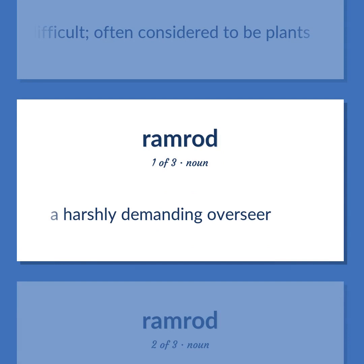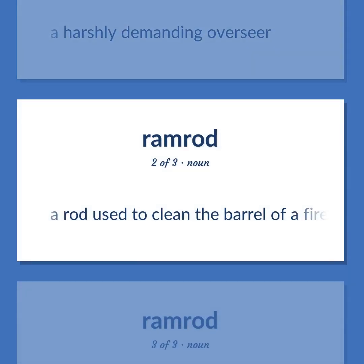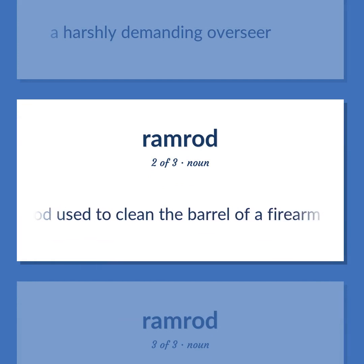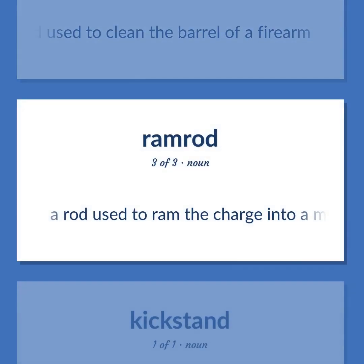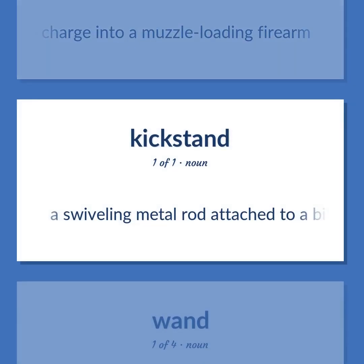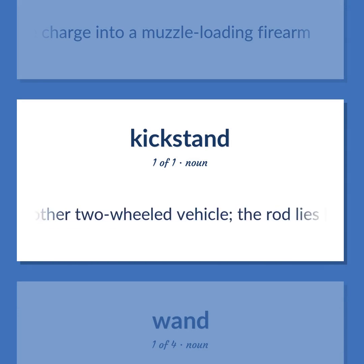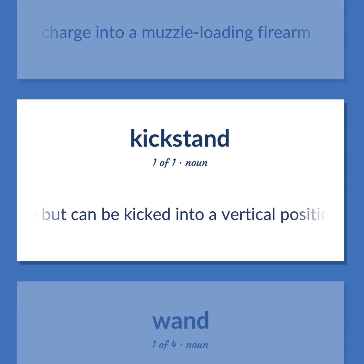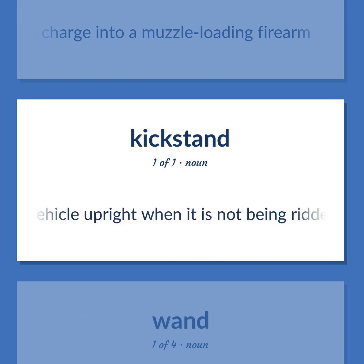A harshly demanding overseer. A rod used to clean the barrel of a firearm. A rod used to ram the charge into a muzzle-loading firearm. A swiveling metal rod attached to a bicycle or motorcycle or other two-wheeled vehicle; the rod lies horizontally when not in use but can be kicked into a vertical position as a support to hold the vehicle upright when it is not being ridden.